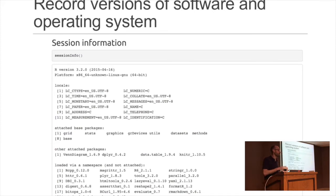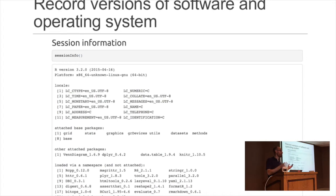To record version information, we started from an R Markdown template file that at the end of every analysis would run session_info — the R function — which tells you the R version, the operating system, and any attached R packages and their versions.